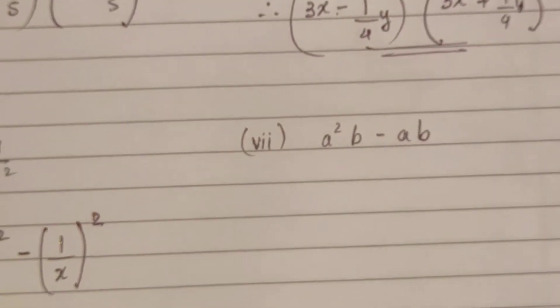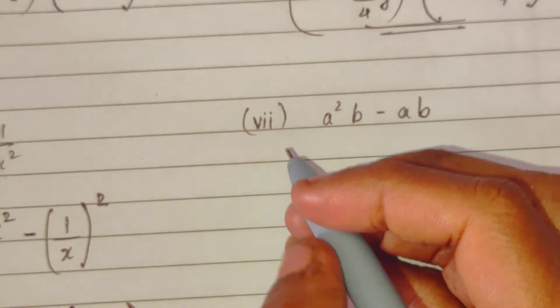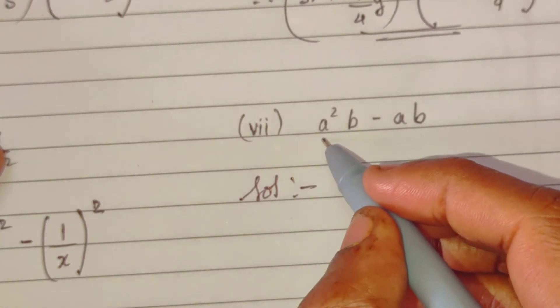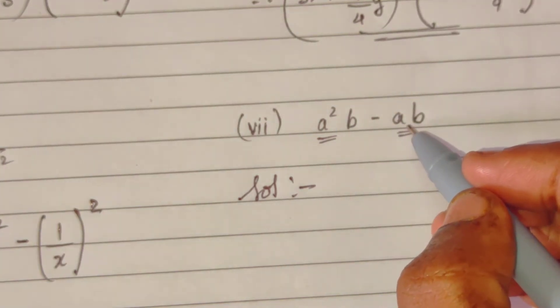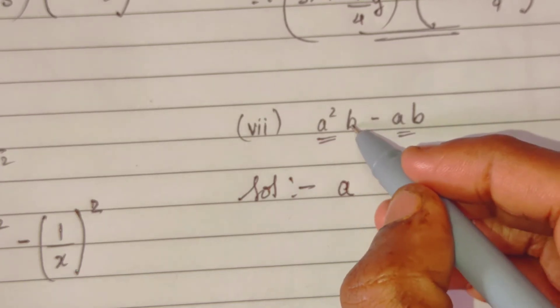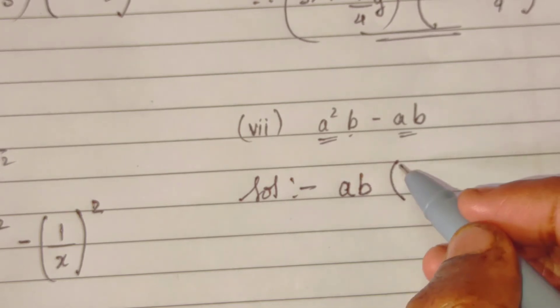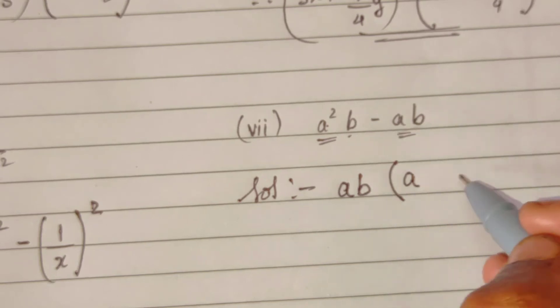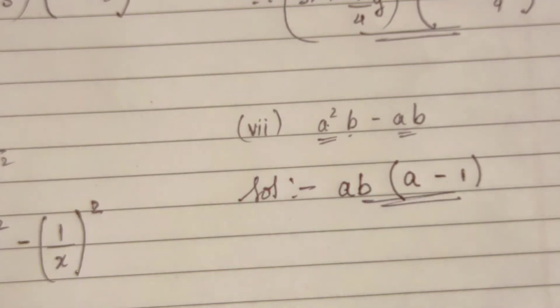Next sum. Here we have to do a little operation. See, here you have a square though, here you have single a, so that you will take common. If b, here you will take common, then take a bracket. Here you are left with a minus 1. This is your factorization: a times b multiplied by a minus 1.